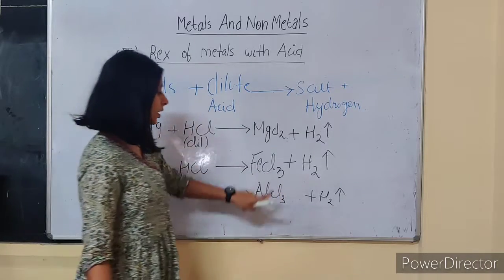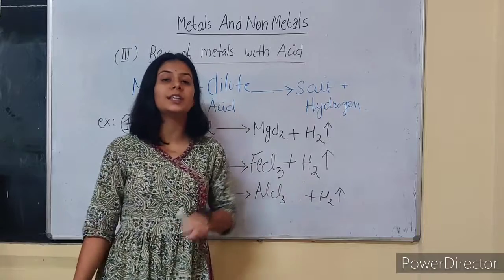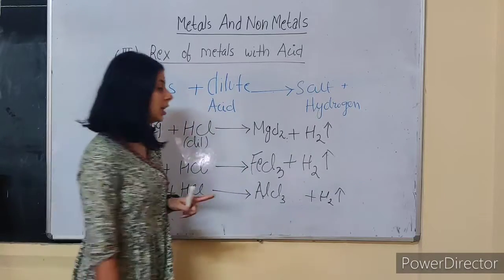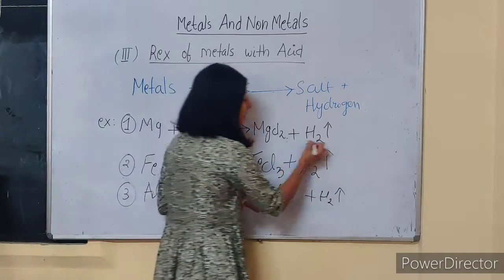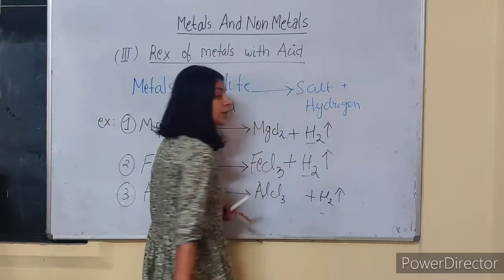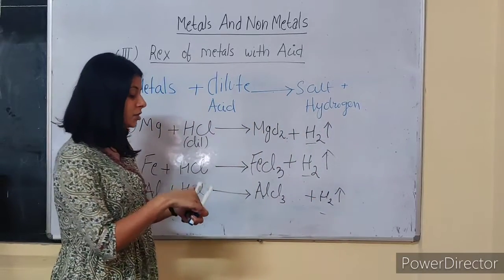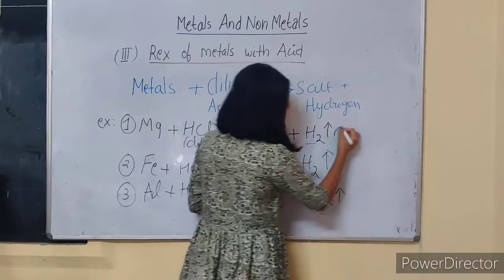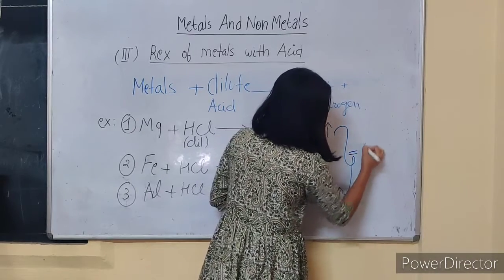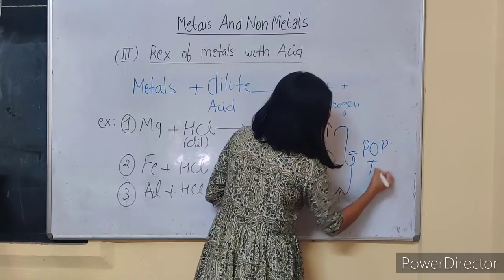So magnesium chloride, ferric chloride, and aluminium chloride are all salts in nature, while hydrogen gas is evolved in the reaction. The presence of hydrogen gas can be detected by a test.